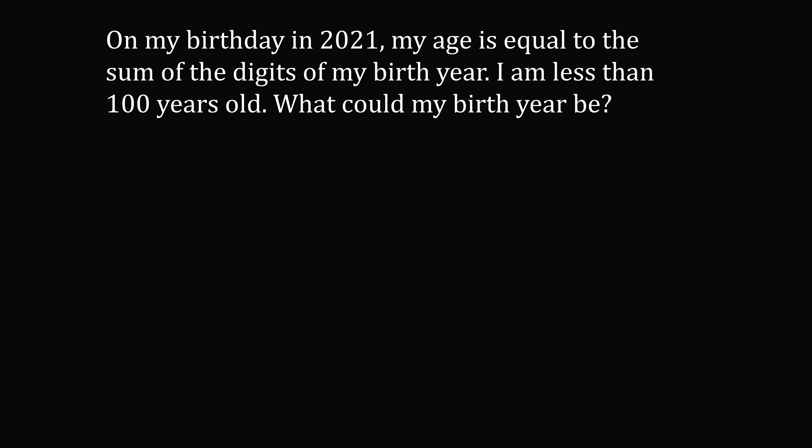This is a tricky word problem, so let's work it out step by step. On your birthday in 2021, mathematically, your age is equal to 2021 minus your birth year. Now, since you are less than 100 years old, you are either born in the 1900s or the 2000s.